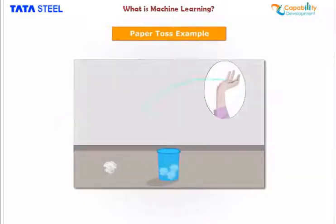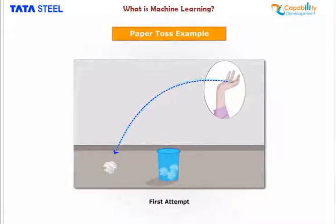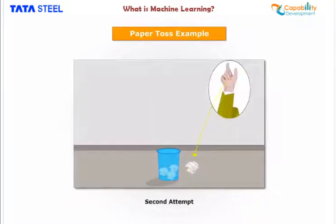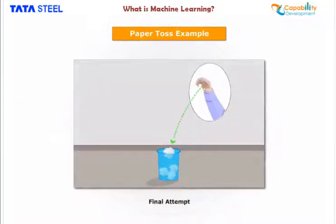Consider that you are trying to toss a paper into a dustbin. After the first attempt, you realize that you have applied too much force on it. After the second attempt, you realize that you are closer to the target, but you need to increase your throw angle. This way, after every throw, you are learning something and improving the end result.